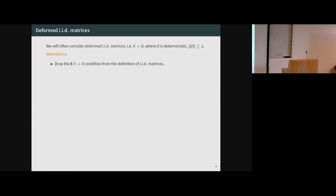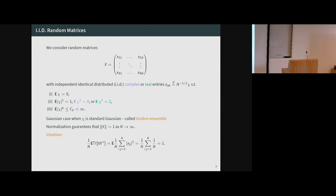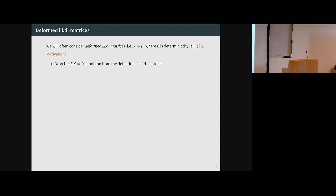Very often we will consider the deformed version. The deformed IID random matrices are just X plus D, where X is an IID matrix as before and D is a deterministic matrix which is also of order 1. One way to think about it: if you drop the condition that the expectation of matrix elements is zero, you can put the mean into D, making D a deterministic matrix. But it's better to think about it as D being any deterministic matrix and X being an IID perturbation.